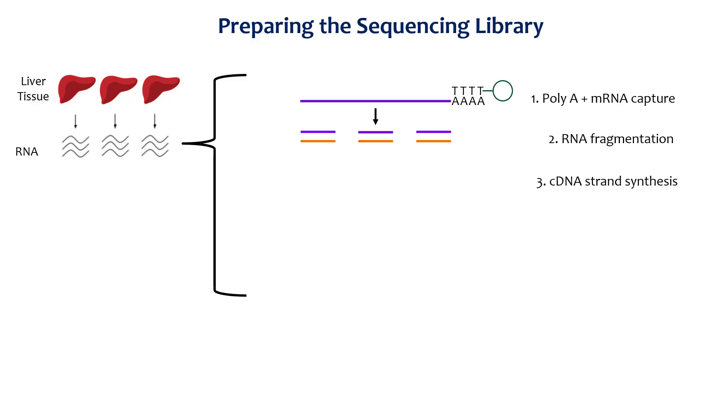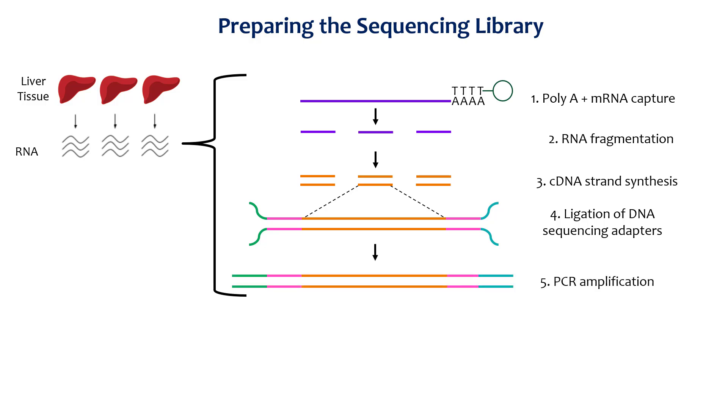This cDNA is then ligated to DNA fragments whose sequence creates a unique barcode to identify each sequence cDNA with the sample it originated from. Finally, these barcoded cDNA collections, called libraries, are amplified by the polymerase chain reaction, or PCR. This step creates a pool of cDNA with a high enough concentration for sequencing.